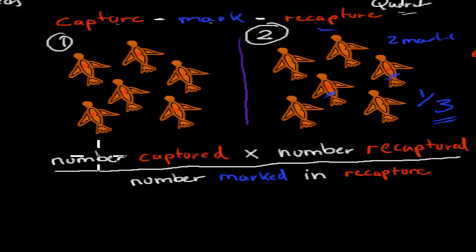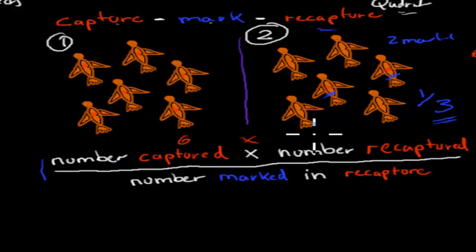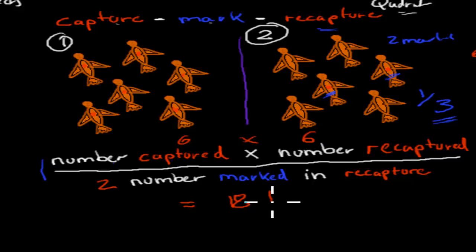The formula is: number captured × number recaptured ÷ number marked in recapture. So six times six equals 36, divided by two marked, gives 18. We estimate there are 18 birds in the total population in that given area.